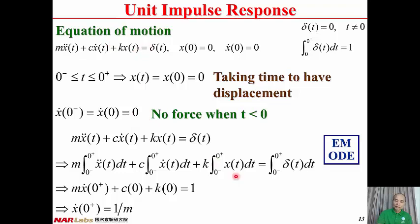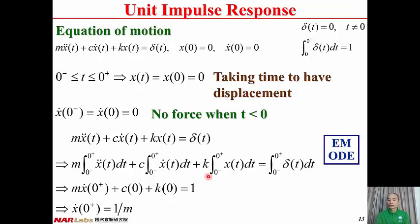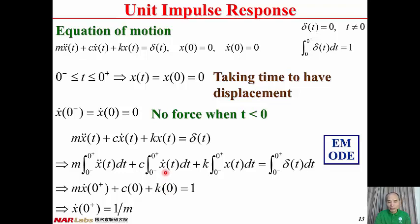Integrating the equation of motion from 0− to 0+: the right-hand side gives ∫δ(t)dt = 1. The Kx(t) term vanishes because x(t) = 0 near T = 0. The Cx-dot term integrates to displacement, which is also zero. The first term, M·x-double-dot, integrates to M·[x-dot(0+) − x-dot(0−)]; since x-dot(0−) = 0, x-dot(0+) − x-dot(0−) term simplifies accordingly.